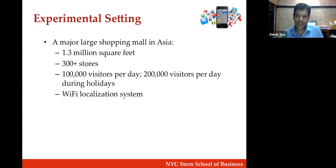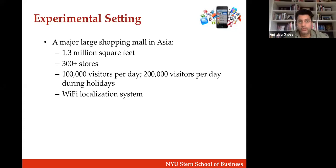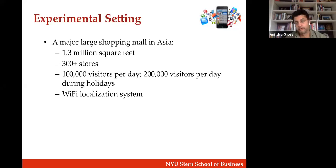Another question: did you have access to the customers' search history, which might boost confidence further? In this particular study, we did not use search history because we wanted to keep it to pure location trajectory-based targeting and not conflate that. We have other papers where we use both online and offline data to look at the incremental effect — for example, working with companies like Alibaba, using their online search data along with offline location data, where you do see additional benefit.